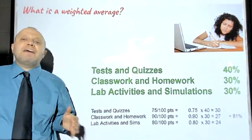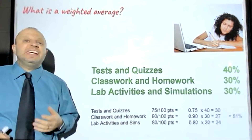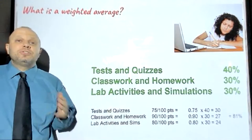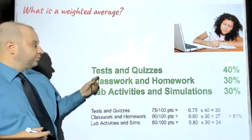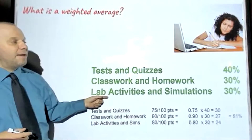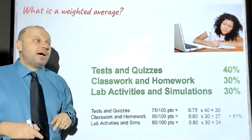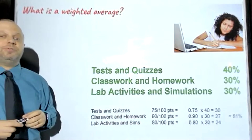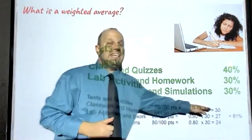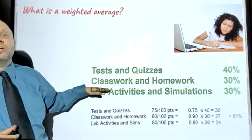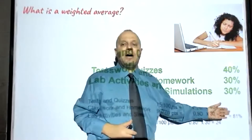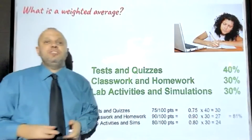We actually use weighted averages when I calculate your grade — it's not a straight average. Not every homework assignment is worth as much as a test, quiz, or lab. Tests and quizzes are worth 40%, classwork and homework is worth 30%, and lab activities and simulations are worth 30%. So I take the number of points, multiply by the percent, and add the categories together. For this sample student, the total grade would be about 81%.